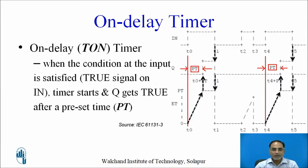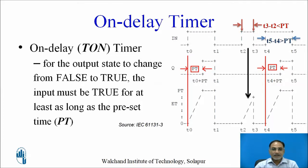For the output state to change from false to true, the input must be true for at least as long as the preset time PT. At t2, the input changes from 0 to 1, but at t3 it changes back from 1 to 0. The width of this pulse is less than PT duration, so at t3 when input becomes false, the ET value resets to 0 and this change is not reflected on the output — it is missed.